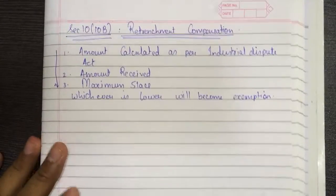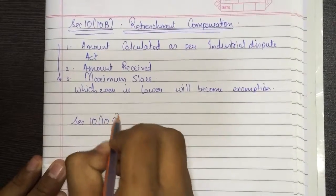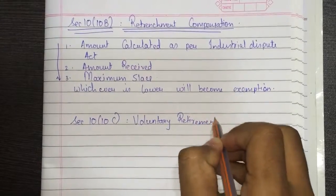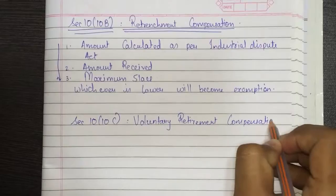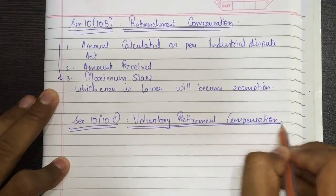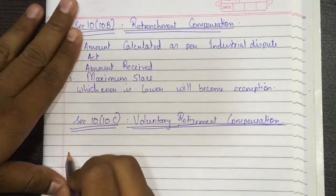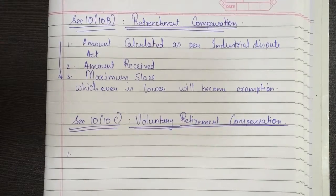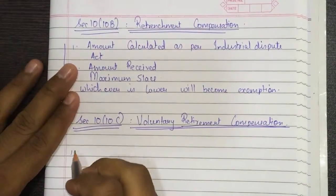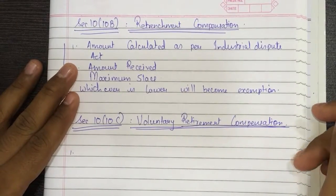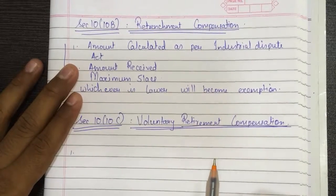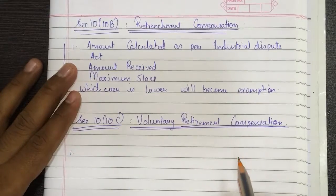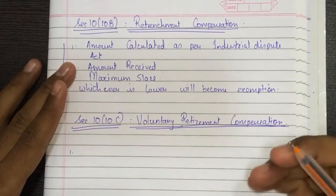Now let's move on to Section 10(10C) — voluntary retirement compensation. Many times the employer provides voluntary retirement compensation because the employee has taken voluntary retirement, and the employer, being generous, compensates him for his work. This amount is income of the employee and enters the computation of total income. Under Section 10, we find the exemption, subtract it from the amount received, and whatever remains in the outer column is the taxable amount.